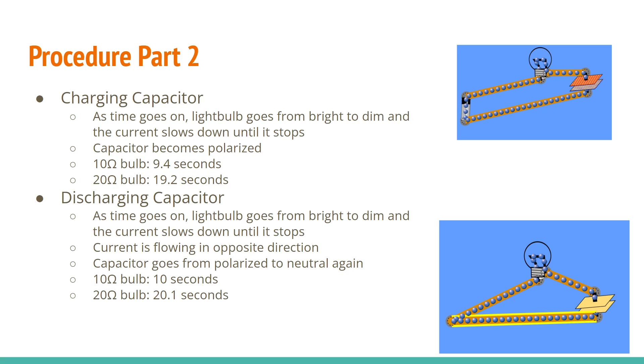And so for the discharging capacitor, it was kind of the same thing once you unplug the battery. As time goes on, the light bulb goes from bright to dim. And then the current slows down until it stops. The current is flowing in the opposite direction. And then the capacitor goes from polarized to neutral again.